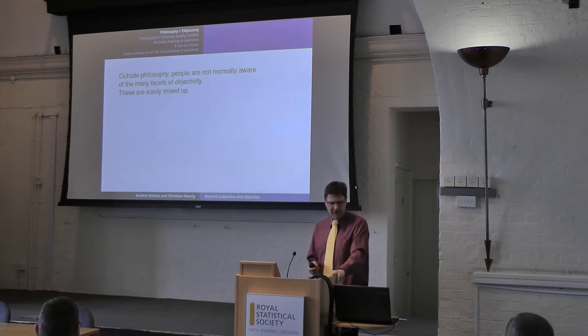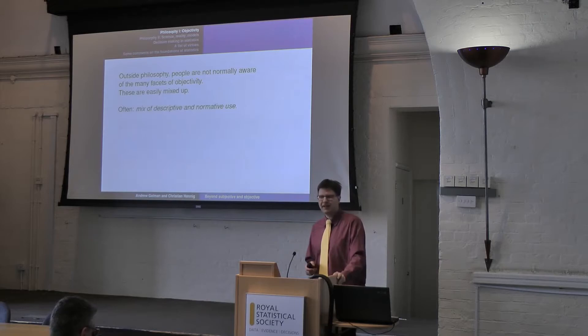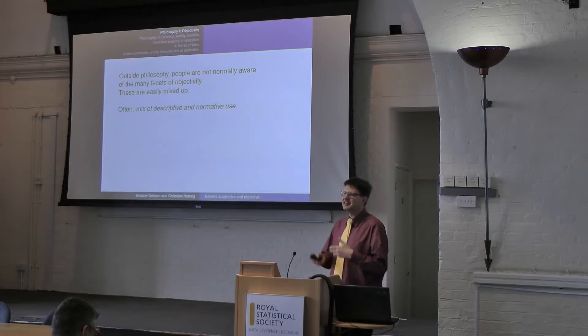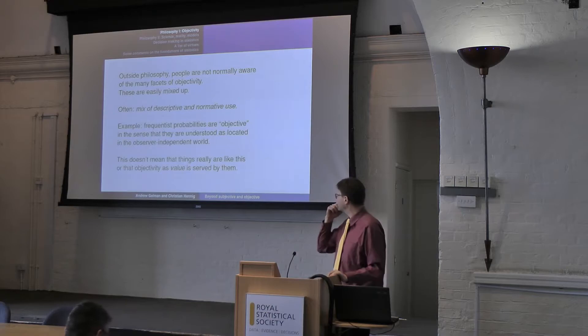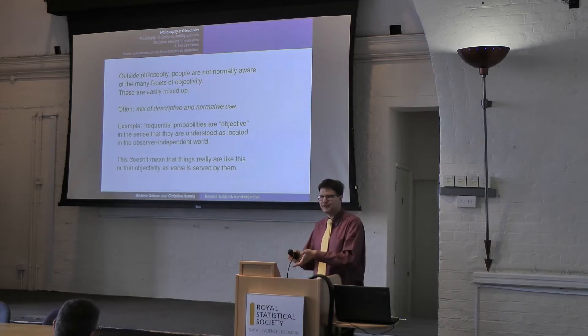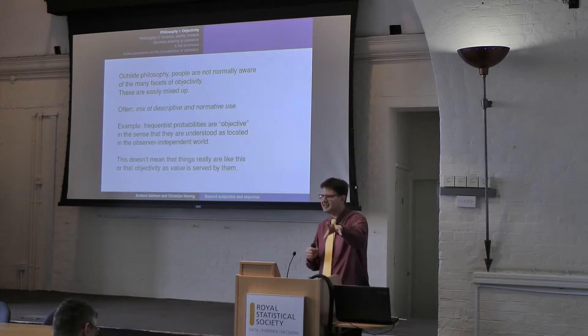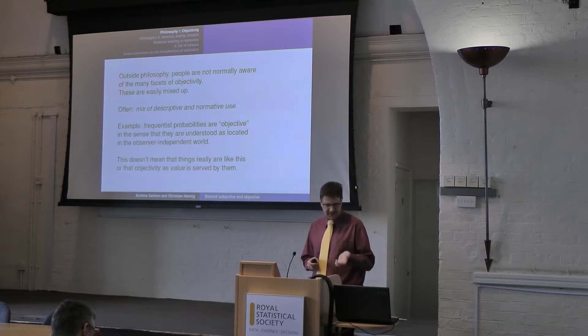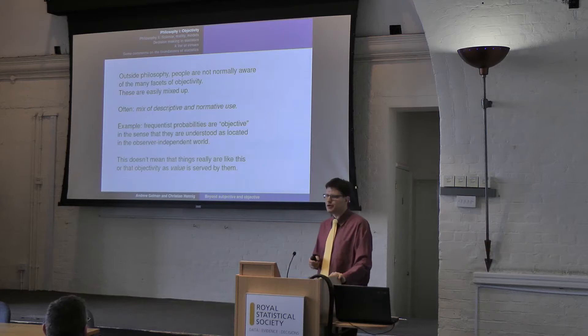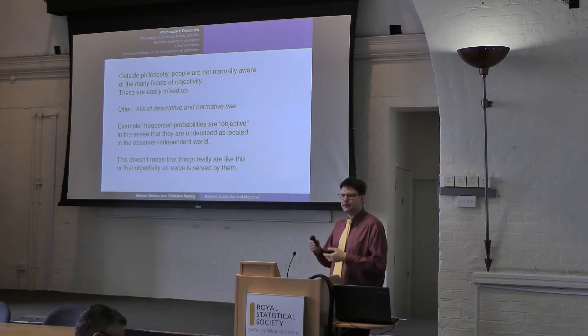In 2015, philosopher Ian Hacking published a paper titled 'Let's Not Talk About Objectivity,' and there are a number of thoughts in that paper quite similar to the ones we have. Outside philosophy, people are not normally aware of the many facets of the term, and these are easily mixed up. One particularly important thing to understand is that people can mix up a descriptive use of objectivity and a normative one. For example, one could call frequentist probabilities objective — meaning something located in observer-independent reality — but just thinking like this doesn't mean things really are like this.